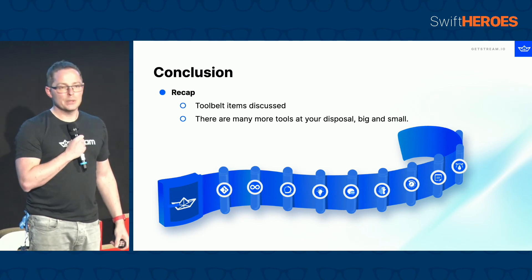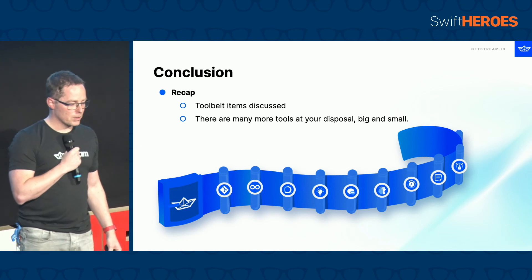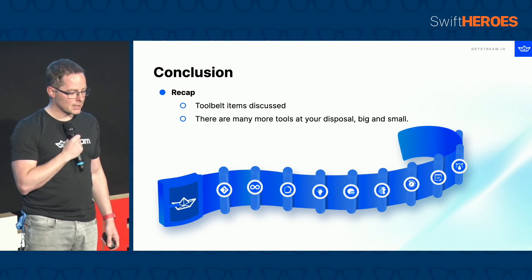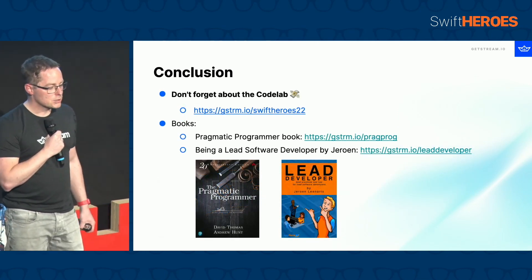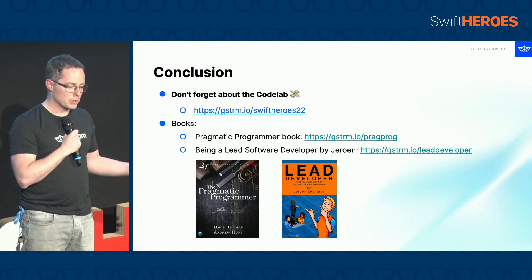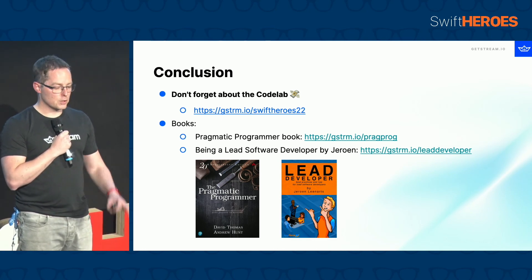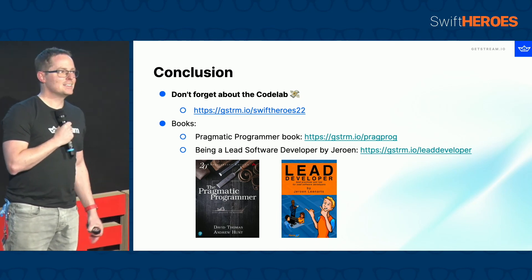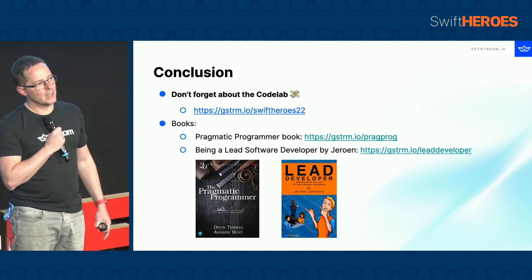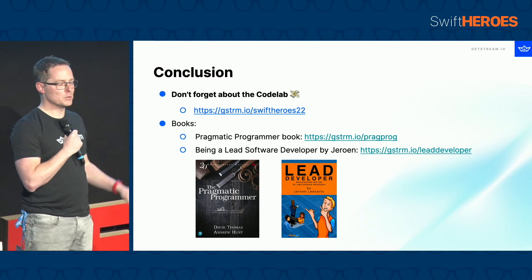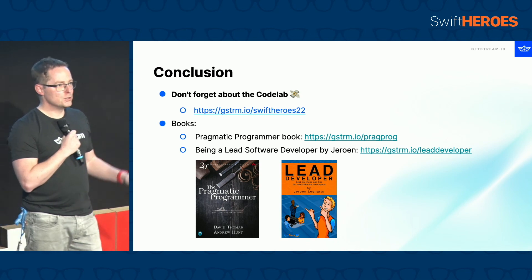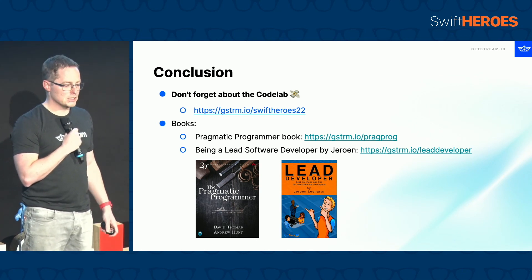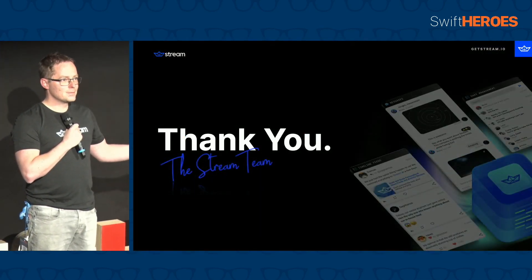Quick recap — there are a number of tool belt items we discussed, exactly nine, and of course there are many more things large and small to improve your day-to-day life as a software developer. Don't forget about the code lab we mentioned. There are also some really good books as resources: the Pragmatic Programmer and a book I wrote myself called Lead Developer. There are two discount codes — the first is 'SwiftHeroes' which gives you a free copy of the book, so start typing now because there's an online group in competition with you. If that one doesn't work, use 'SWIFTHeroes' for approximately a nine-dollar discount — more than half the price of the book. Thank you, everybody.